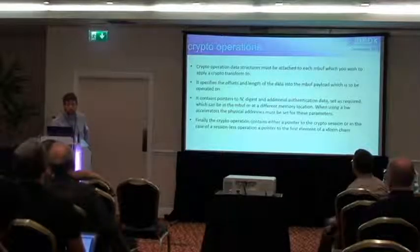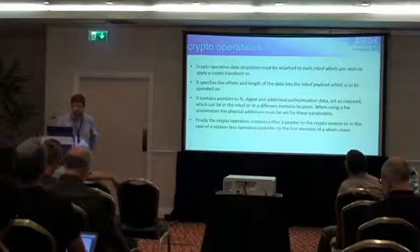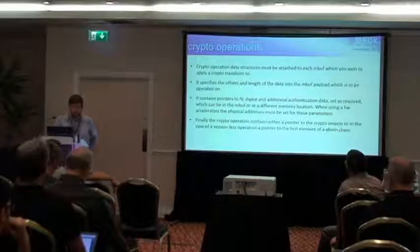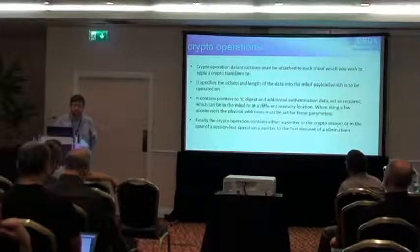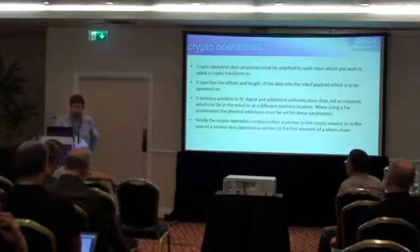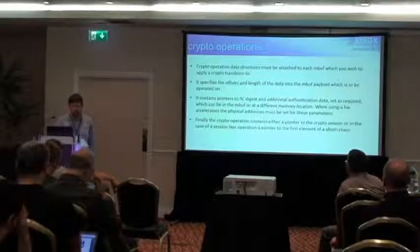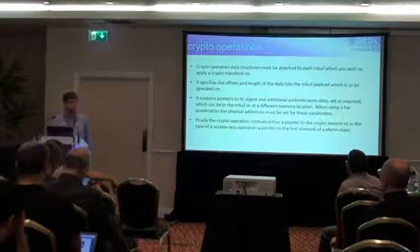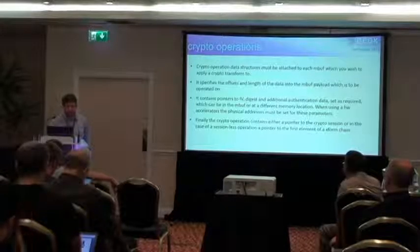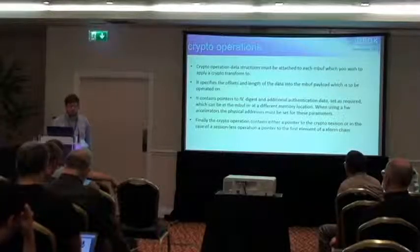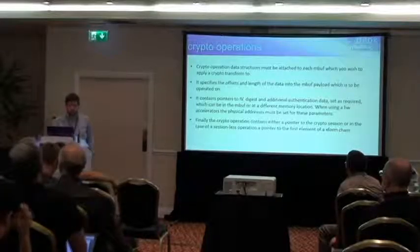The crypto operation is the structure that gets attached and filled out on a per-packet basis. It contains the mutable data that changes from packet to packet — offsets into the mbuf and the length of the data. It also contains pointers to IV, digests, and additional authentication data as required for the particular transform. Those IV and digest pointers could be pointed internally within the mbufs, or allocated in another location. If using a hardware device, those need to be in physically addressable space.